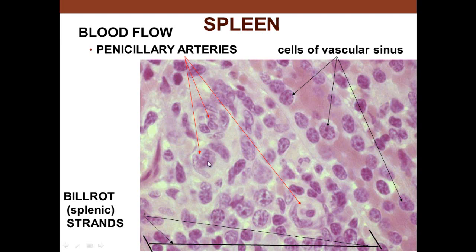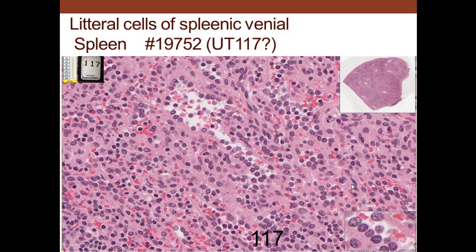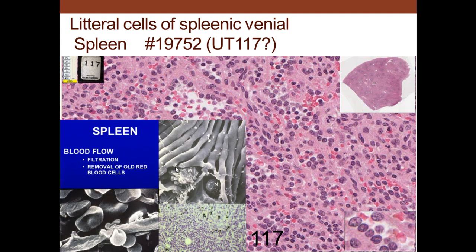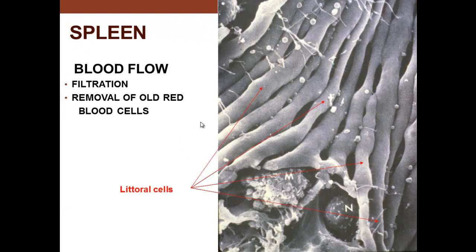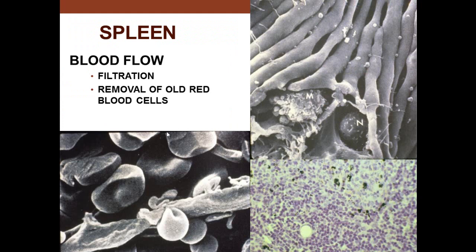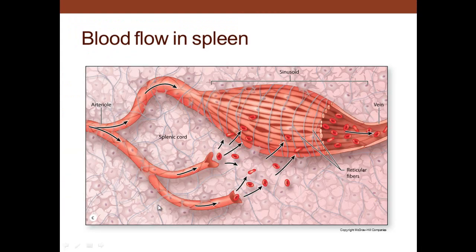For blood to get back into the bloodstream, it must pass through the cells of the vascular sinus — known as littoral cells. These are lined up like picket fences, and are taller endothelial cells than normally seen. Red blood cells must squeeze through between these cells to re-enter the vasculature — this is the extravascular sojourn. Aged red blood cells are less pliable and are eaten by macrophages if they cannot pass through.